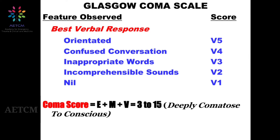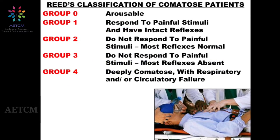Another popular classification is the REITS classification, ranging from group 0 to group 4. Group 0 is basically arousable. Group 1 responds to painful stimuli and has intact reflexes. Group 2 does not respond to painful stimuli but most reflexes are normal. Group 3 does not respond to painful stimuli and most reflexes are absent. Group 4 is deeply comatose with respiratory and circulatory failure.